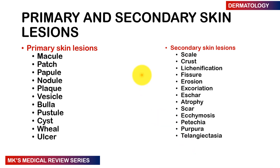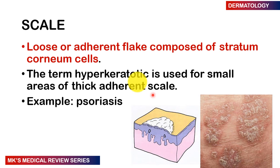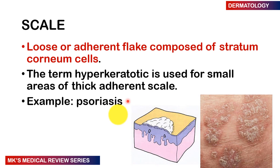Those are the primary skin lesions. Now we move on to secondary skin lesions. Beginning with a scale — this is loose or adherent flakes composed of stratum corneum cells (cells of the epidermis). The term hyperkeratotic can be used for small areas of thick adherent scales, as seen in psoriasis. You can see whitish scales covering the lesion in this patient with psoriasis.